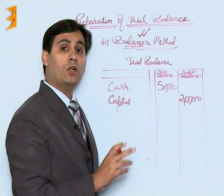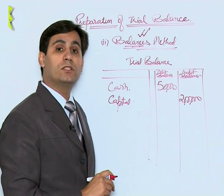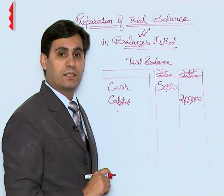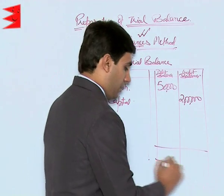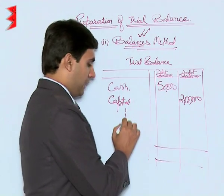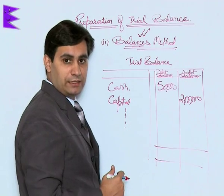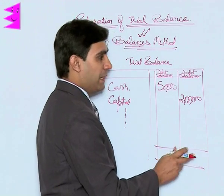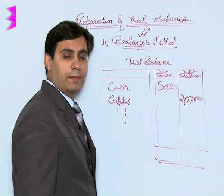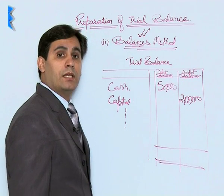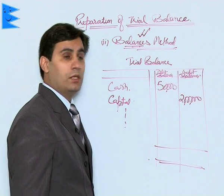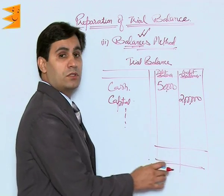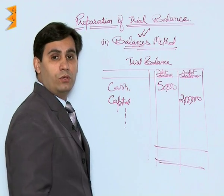We are not showing totals of debit and credit sides — only the balances. We put in all accounts from the ledger, and finally the total of debit balances should match the total of credit balances. If they do not tally, there is some error in the accounts which needs to be rectified.